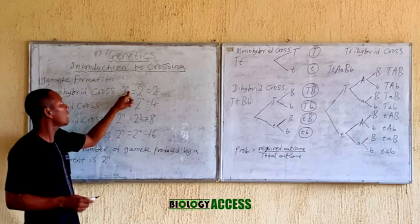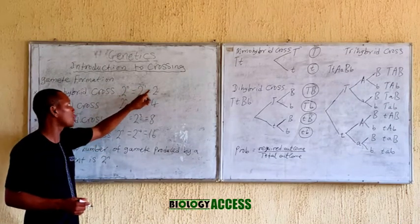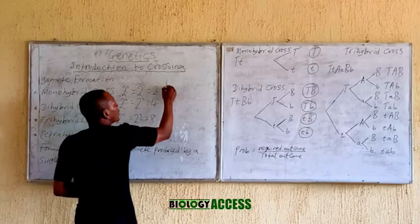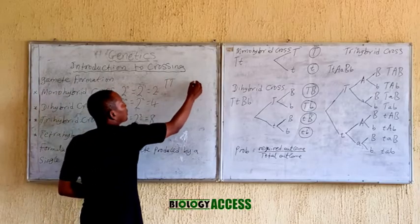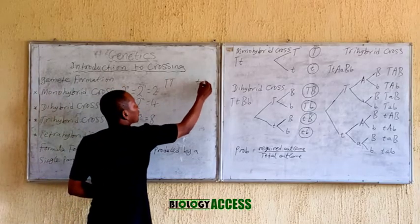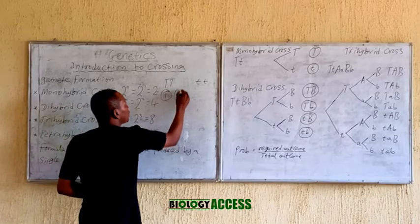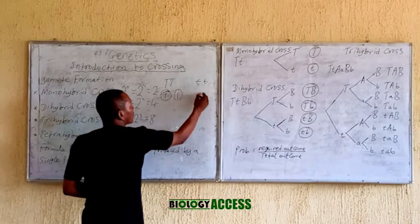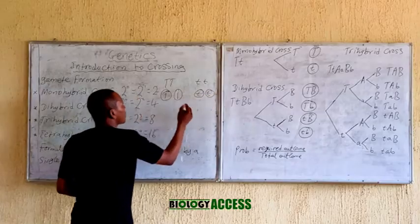For monohybrid cross, how many gametes are produced by a single parent? It is 2 raised to the power 1, which is 2. So if we have a tall person being crossed with a short person, we now have the gametes produced by each single parent.